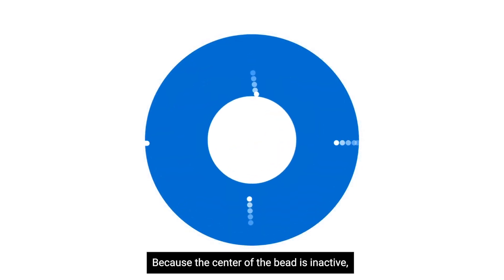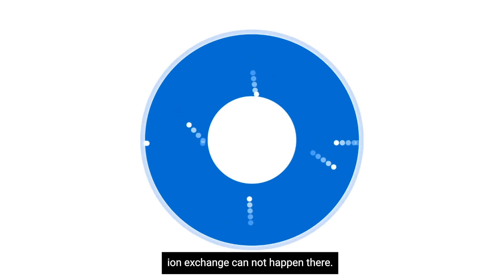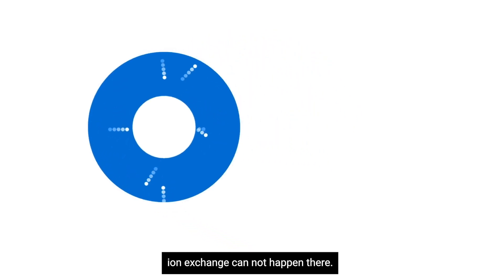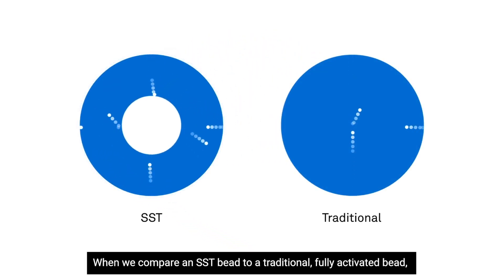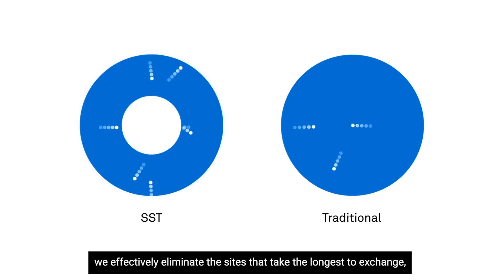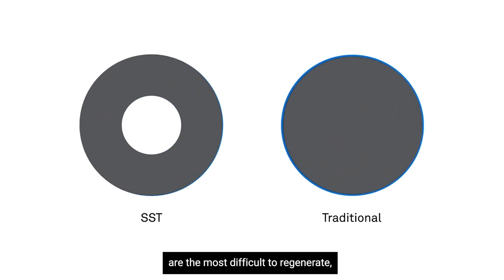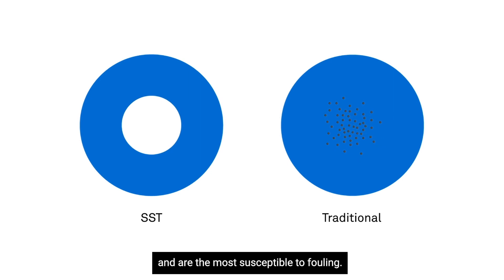Because the center of the bead is inactive, ion exchange cannot happen there. When we compare an SST bead to a traditional, fully activated bead, we effectively eliminate the sites that take the longest to exchange, are the most difficult to regenerate, and are the most susceptible to fouling.